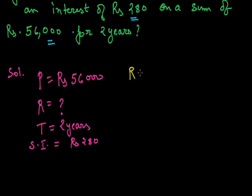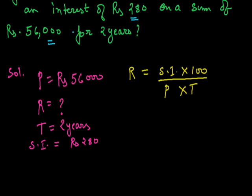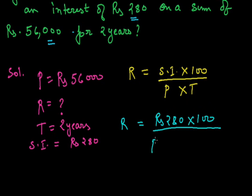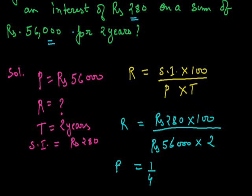The rate of interest is equal to SI into 100 whole upon P into T. Substituting the values: simple interest is Rs. 280 into 100, whole upon principal Rs. 56000 into time period 2 years. If we calculate it, it comes out to be 1/4. Therefore, the rate is equal to 1/4%.